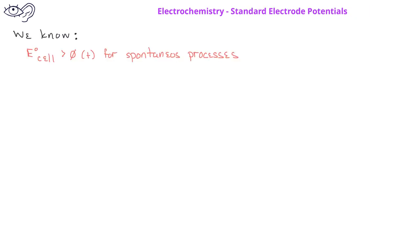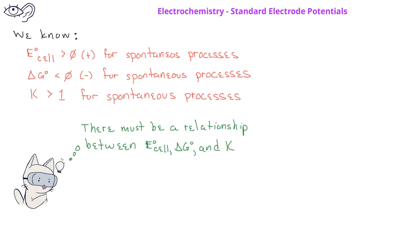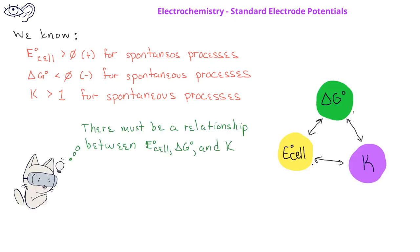In a previous video, we learned that the standard cell potential is positive for spontaneous redox reactions such as those in voltaic cells. We also know from our study of thermodynamics that for spontaneous processes, the standard free energy change is negative and the value of the equilibrium constant is greater than 1. Because of this, we can understand that there is a relationship between the standard cell potential, the standard free energy change, and the equilibrium constant for a chemical process.